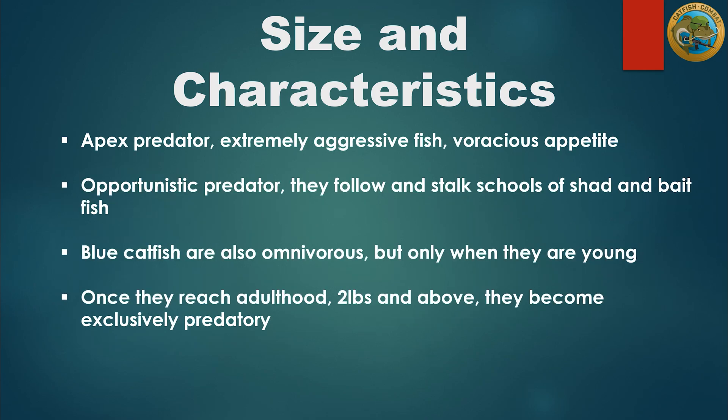Blue catfish that reach adulthood are an apex predator. They're an extremely aggressive fish with a ferocious and insatiable appetite. At times they will eat until their stomachs look like they're going to burst — if they can fit a food source into their mouth, they will try to eat it. They're an opportunistic predator and you can count on them being nearby schools of shad or other bait fish. Blue catfish are also omnivorous, but only when they are young. Once they reach adulthood, however, they become exclusively predatory and carnivorous.